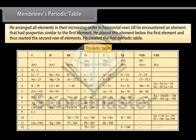Mendeleev arranged all elements in their increasing order in horizontal rows till he encountered an element that had properties similar to the first element. He placed this element below the first element and thus started the second row of elements. This helped him to arrange all the known elements according to their properties. He was thus able to create the first Periodic Table.